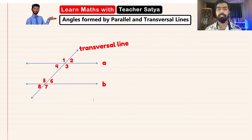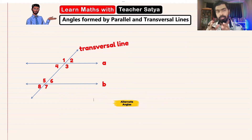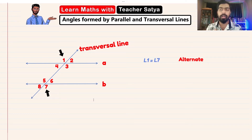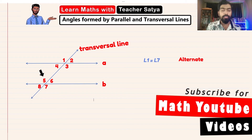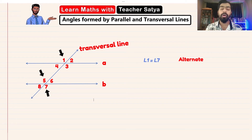For the third and last part, we are looking at alternate angles. This may become a bit tricky, but bear with me. Let's say we have angle 1. Angle 1 is alternate to angle 7. The reason is that angle 1 is equal to angle 5 — corresponding angles. And angle 5 is vertically opposite to angle 7. Therefore, angle 1, angle 5, and angle 7 are all equal, and that is how we find the alternate angle.